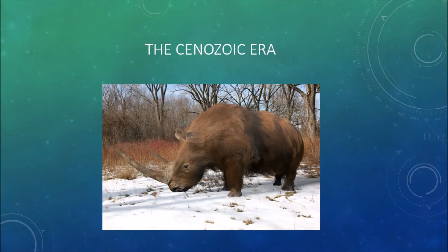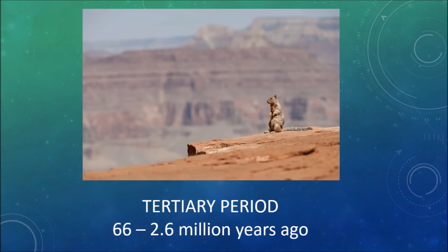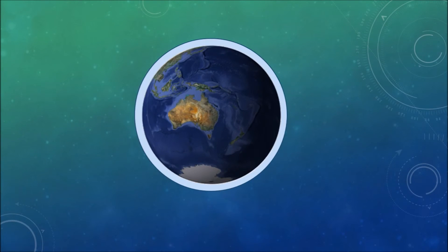Now we're in the Cenozoic Era — the time since the Cretaceous catastrophe. Scientists divide the Cenozoic into two main periods: the Tertiary and the Quaternary. During the Tertiary period, mammals were finally given room to grow. They radiated out to fill every available niche — within a few million years there were elephants stomping around on land and whales cruising the oceans. The Earth itself also developed a recognizable face. As the continents continued to drift apart, they took on the outlines and geography that we see today. Australia had become isolated from every other landmass and set off down a distinctive evolutionary path.